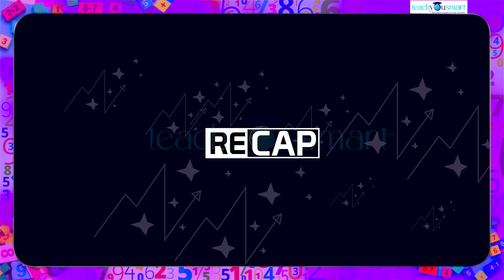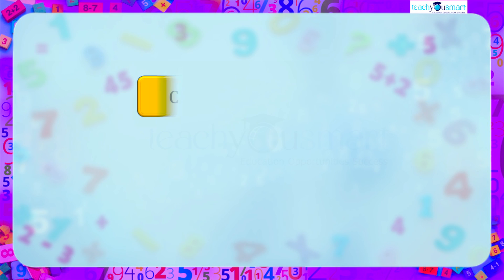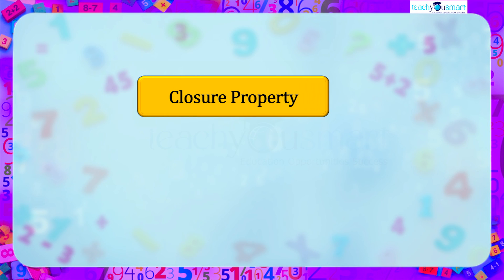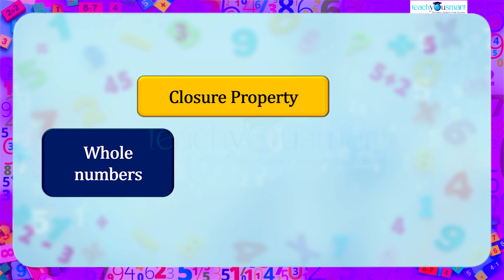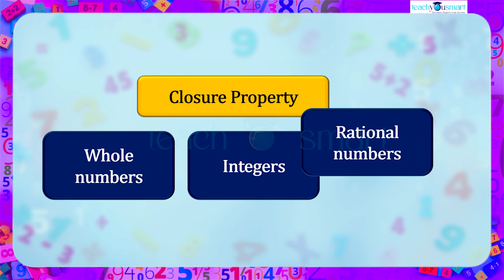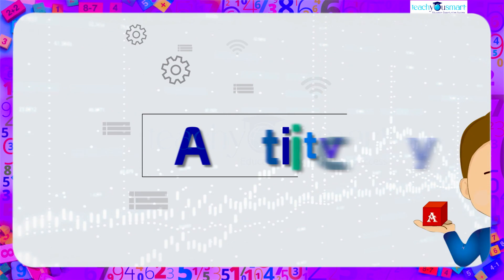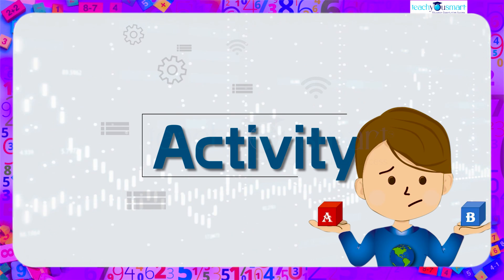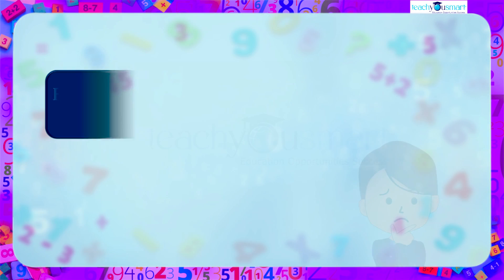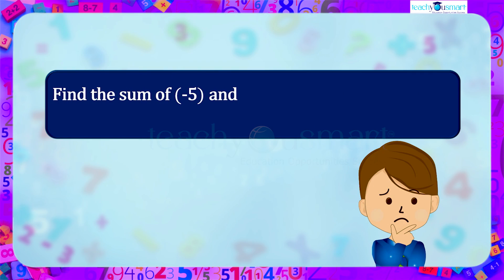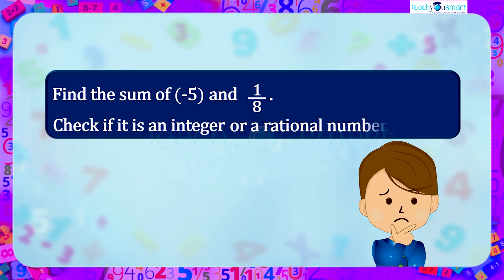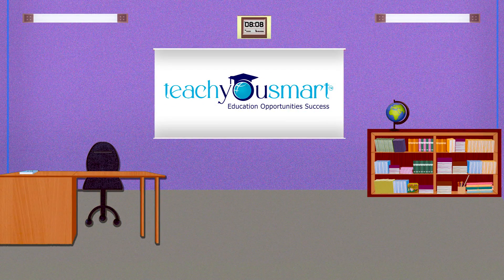Let's have a quick recap. Today we discussed the closure property for whole numbers, integers, and rational numbers. Before winding up, let's check how much you understood by doing an activity: find the sum of −5 and 1/8, and check if it is an integer or a rational number. That's all for now — see you all in the next class.